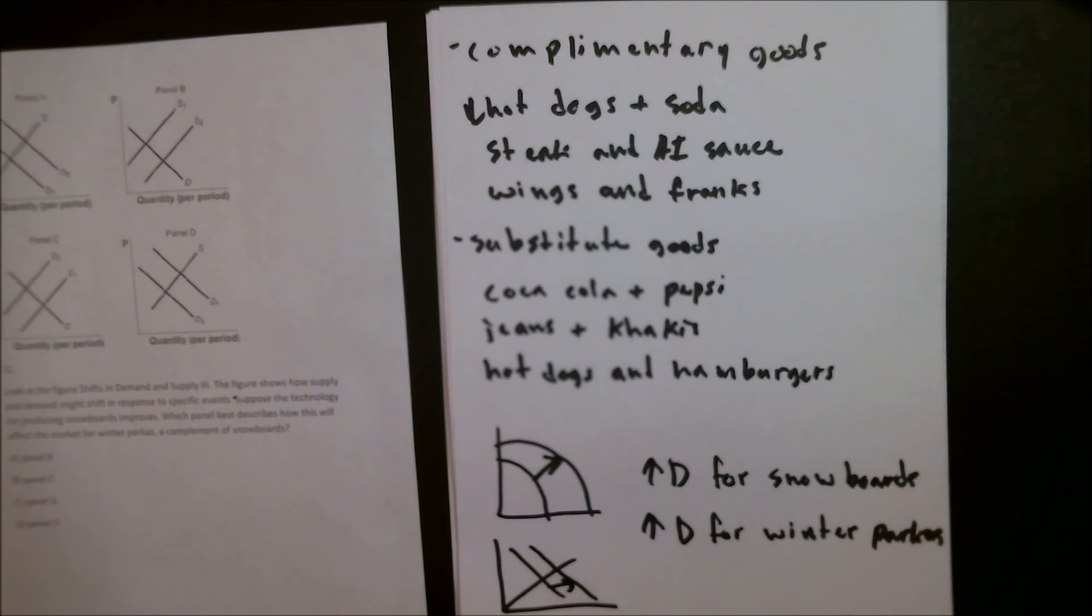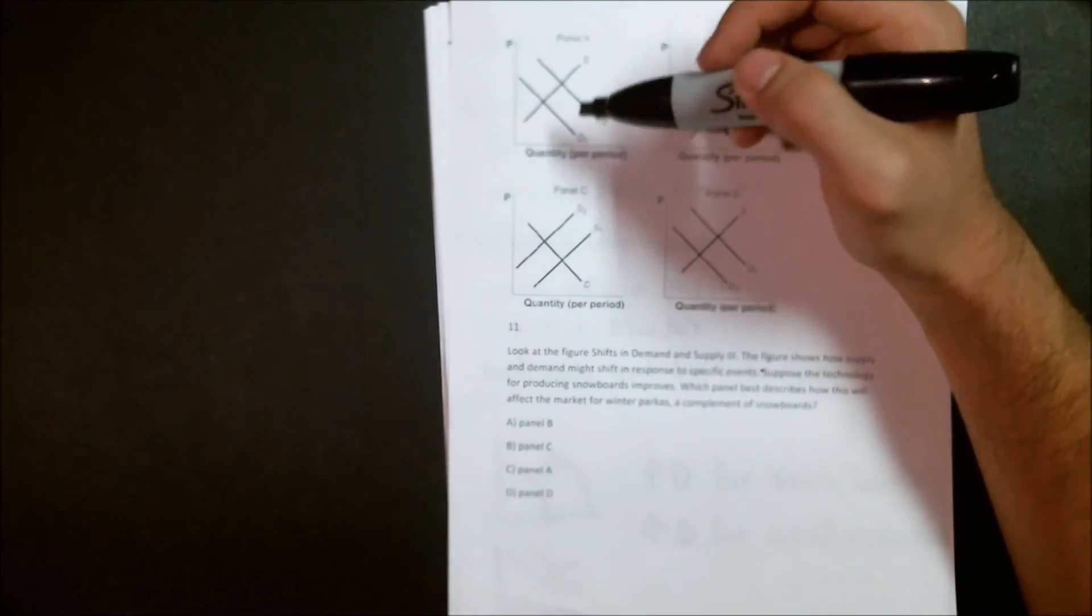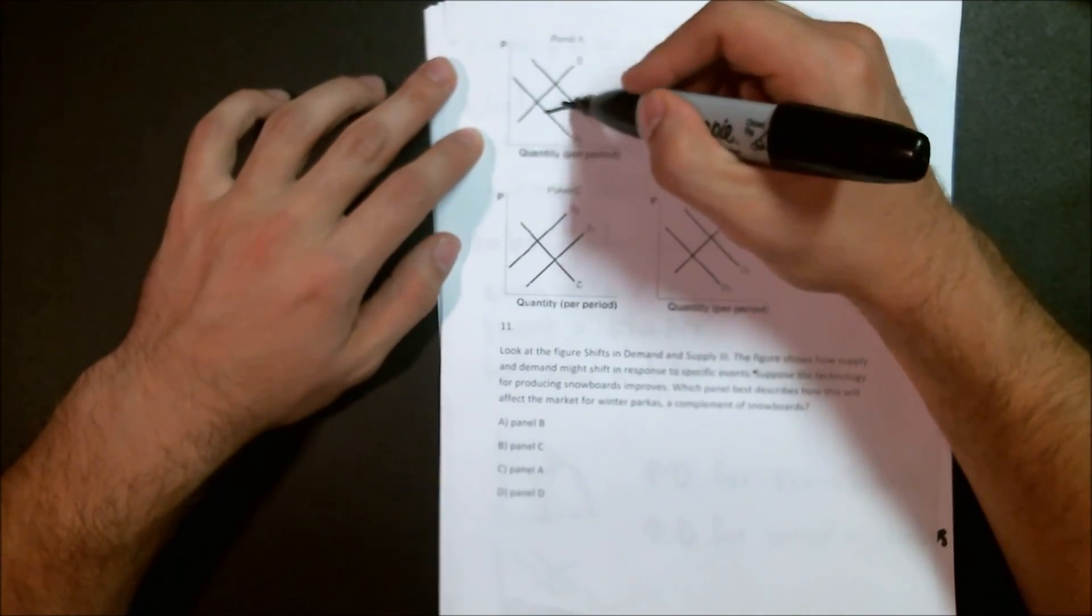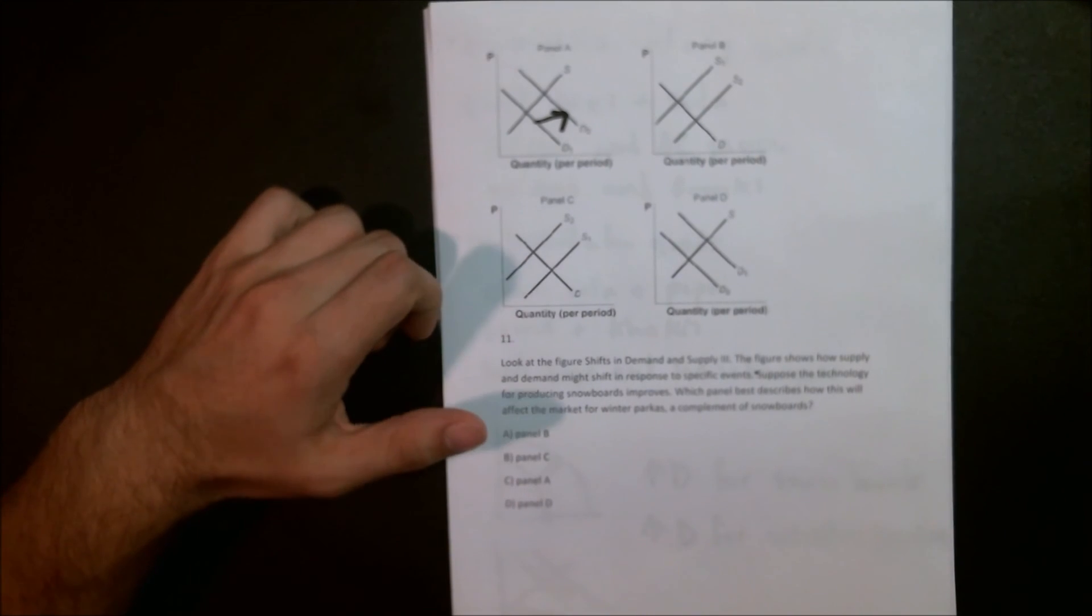Now we look over to the question and say, which panel describes this? Well, that's going to be panel A because here we have our supply line, our original demand curve, and we have an increased demand curve right there. So we're going to go down and we're going to know the answer is going to be C, panel A.